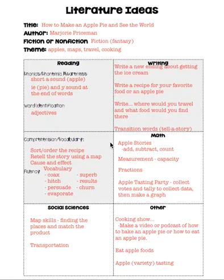In the area of comprehension, I really like sorting or ordering the recipes, or even your own recipes, to go along with this story. Also, this is a nice story that you can retell using a story map, but your story map would look like a map of the places she visited. You can pull out a world map or make your own and have students retell what happened at each place the little girl visited.